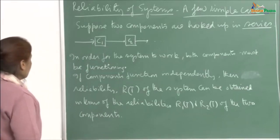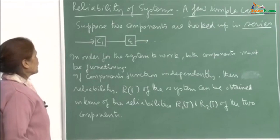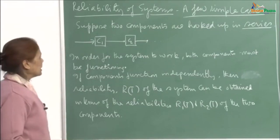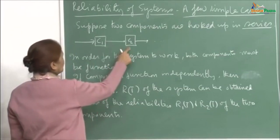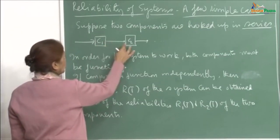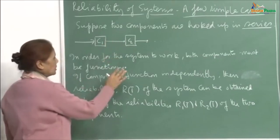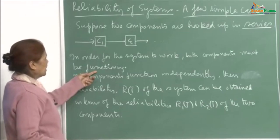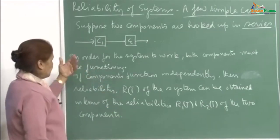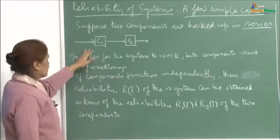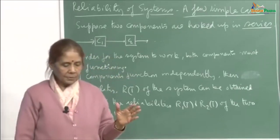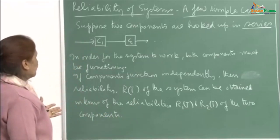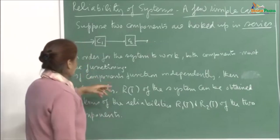I am beginning with the simple case where two components are hooked up in series — C1 and C2. For the system to work, both components must be functioning. They are in series, possibly performing different tasks for the whole device, so they both have to function. If any one of them fails, then the system will fail.